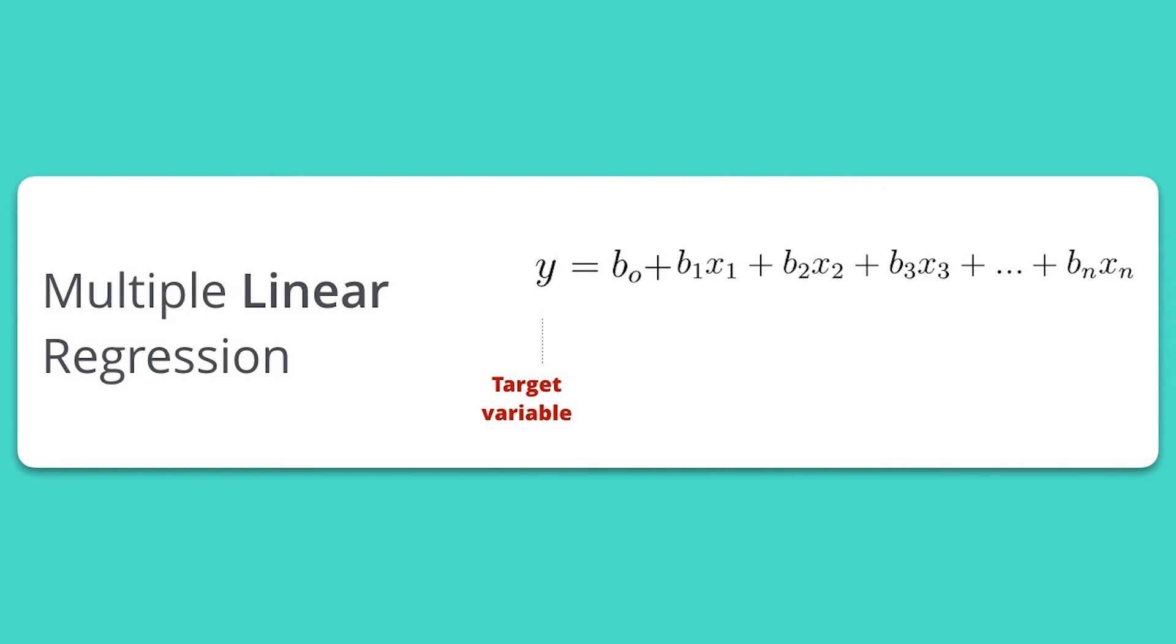Let's revisit the formula from lesson one. Patrick presented the linear regression formula you see on the screen here. As a reminder, in this equation, y is the target variable, and beta naught is the intercept or the baseline value.